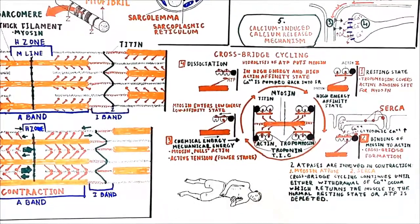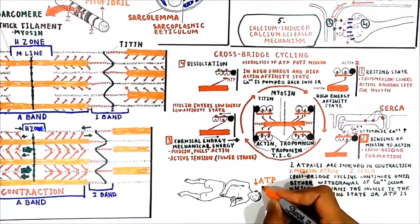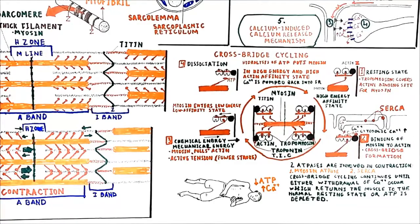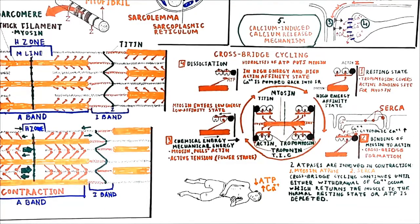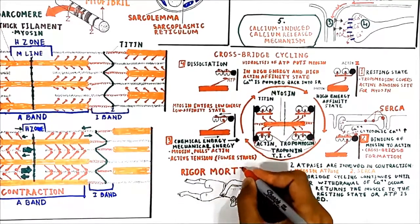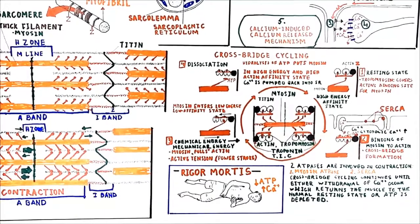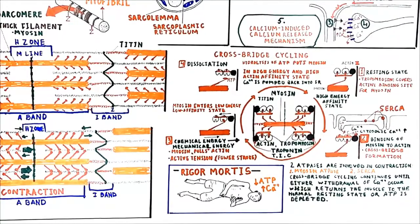Following death, the muscle cell becomes ATP-depleted and there is no ATP activity. Calcium leaks from the sarcoplasmic reticulum and attaches to troponin, forming a cross-link between actin and myosin, and the muscles contract. But with no ATP, the cross-link will not break. This is the state of rigor mortis. Lysosomal enzymes eventually break the link to terminate the state of rigor mortis.